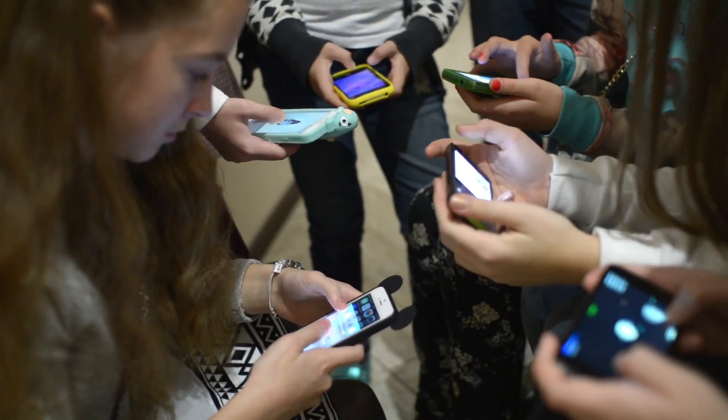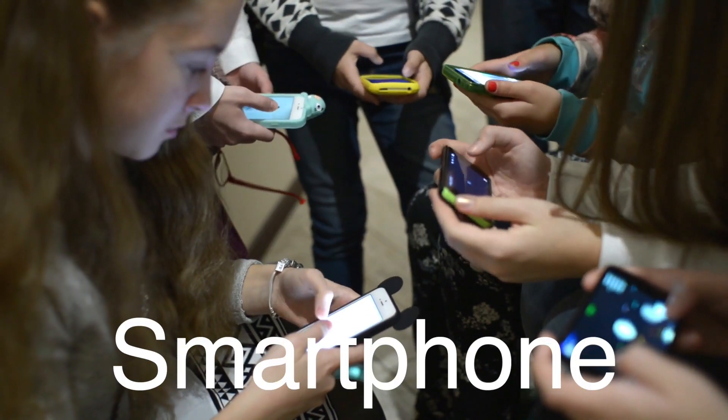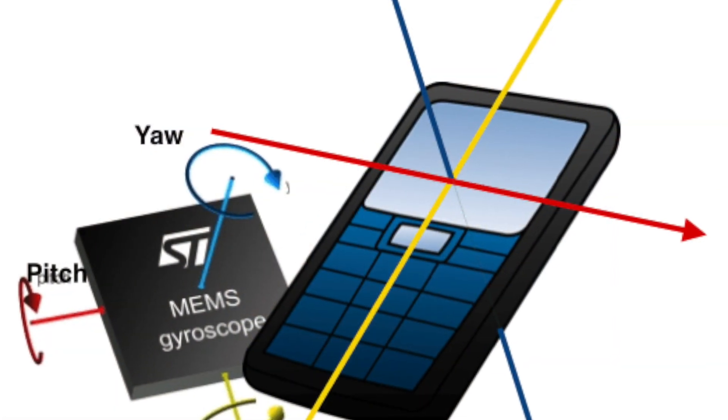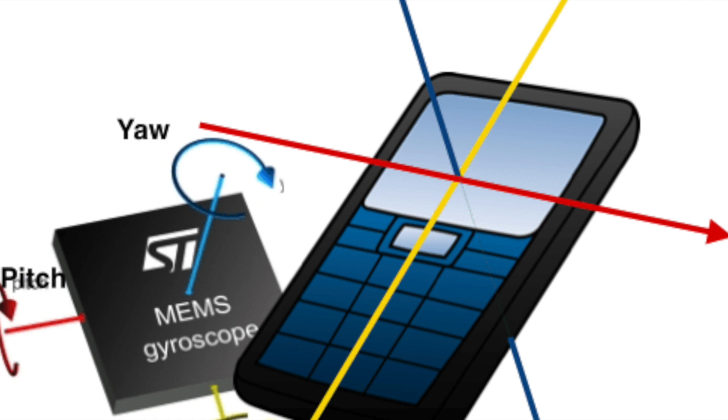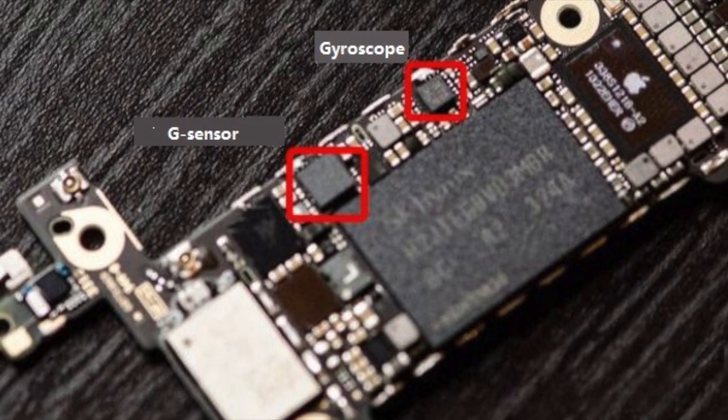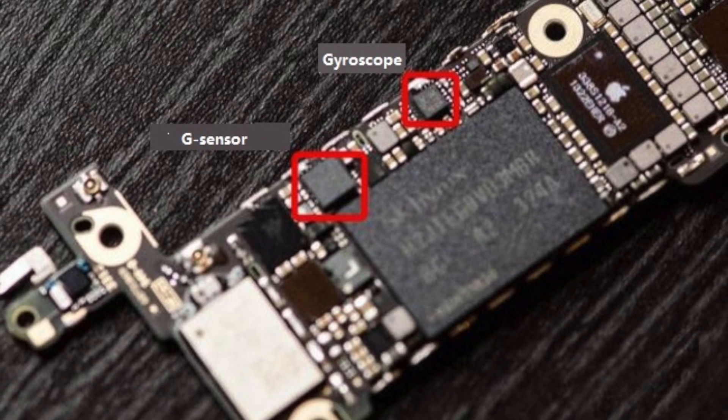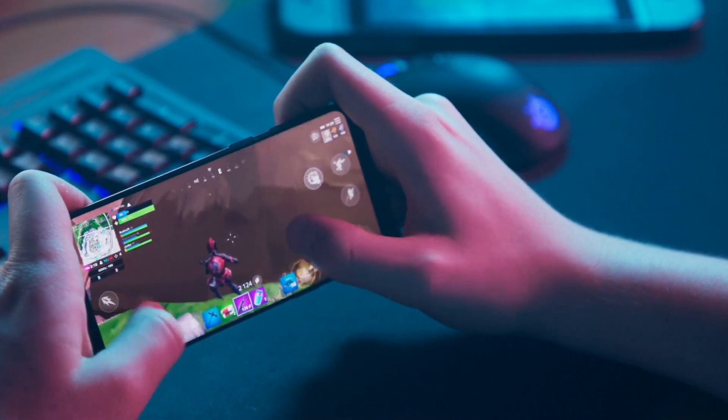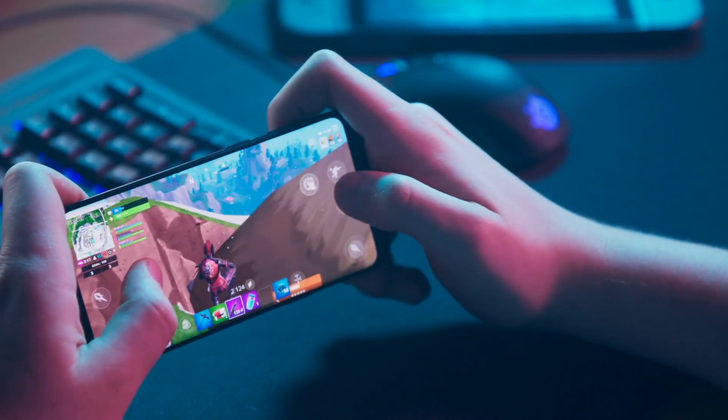Gyroscopes have also found their way into our daily lives through smartphones. In conjunction with accelerometers, gyroscopes enhance the device's ability to sense motion and orientation. This combination is what enables features like screen rotation, motion-based gaming, and augmented reality applications. For instance, when you play a racing game on your phone and tilt it to steer, the gyroscope detects the tilt and adjusts the game accordingly. This seamless integration of gyroscopic data provides a more immersive and intuitive user experience.